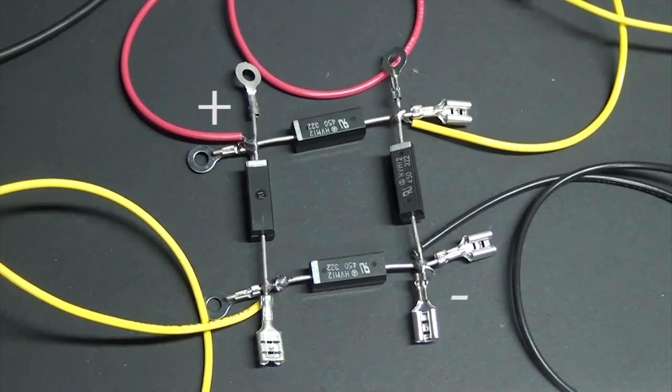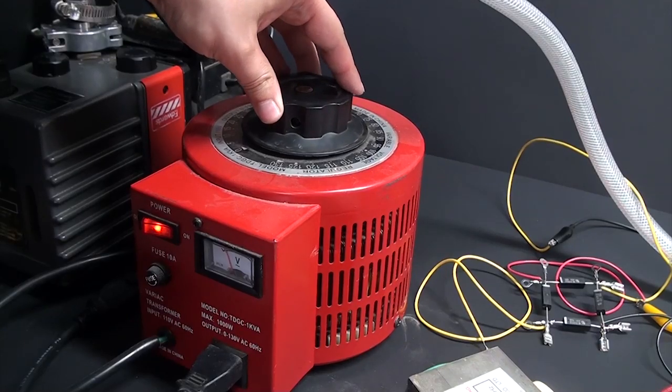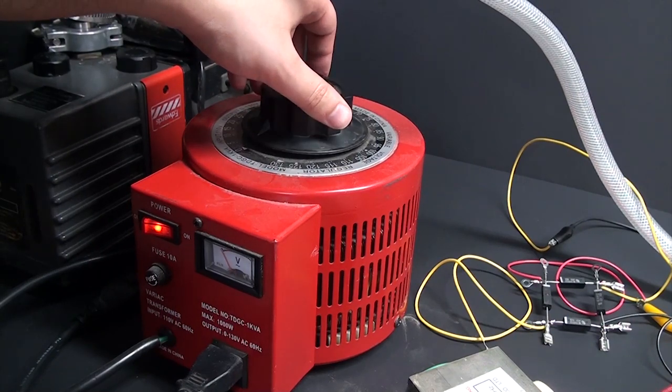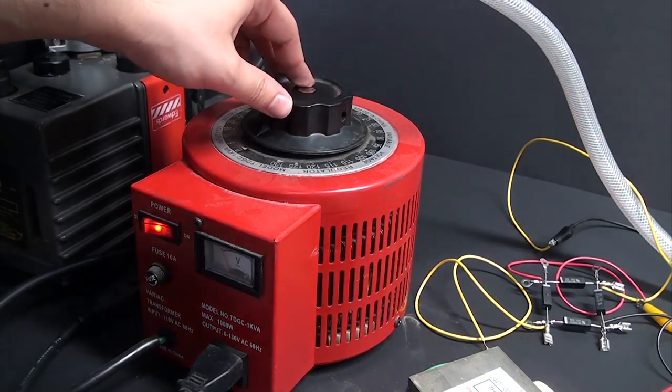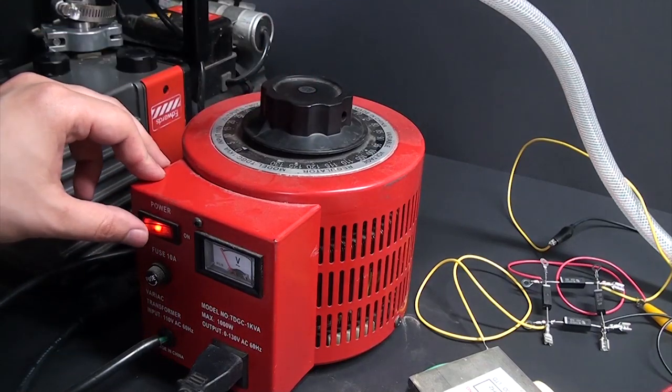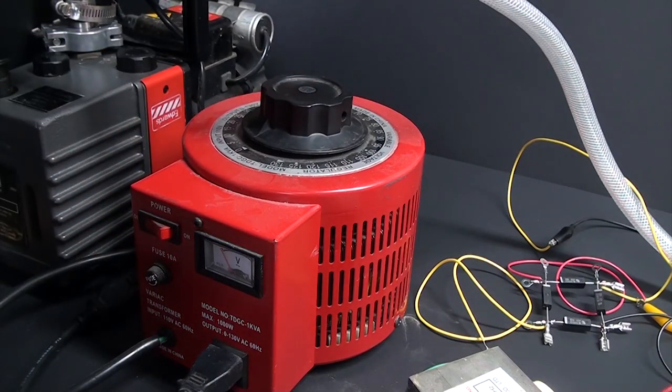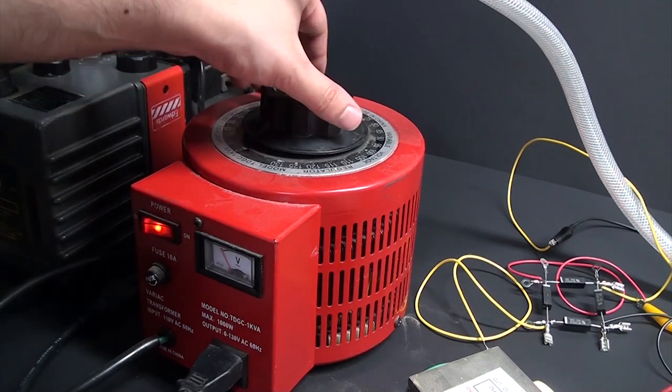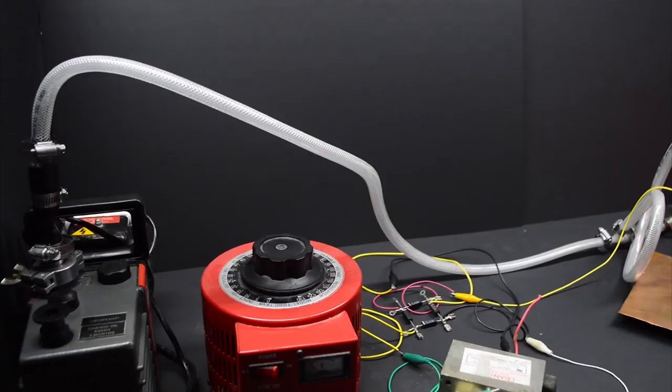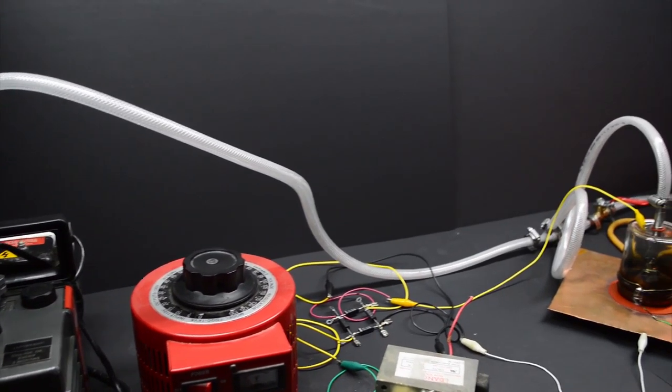To control the system, I'm using a variac, which is a special transformer that lets you throttle the voltage from 0 to 120 volts on the input side of the transformer. For my runs, I never went past 60 volts, as any more, and so much current would be drawn that the diodes would probably explode. And with that, all of our pieces are basically ready to go.